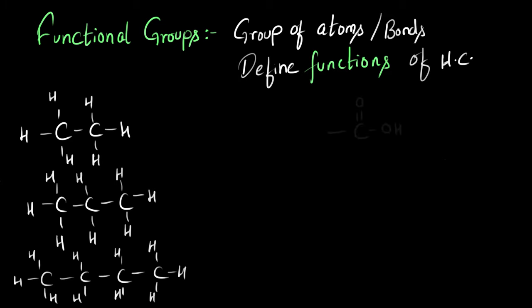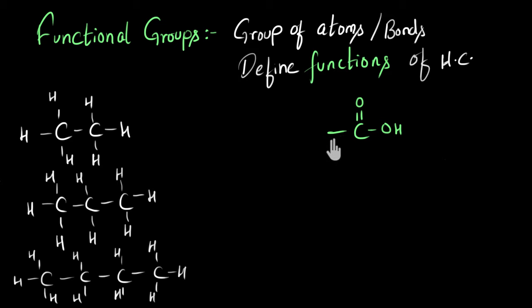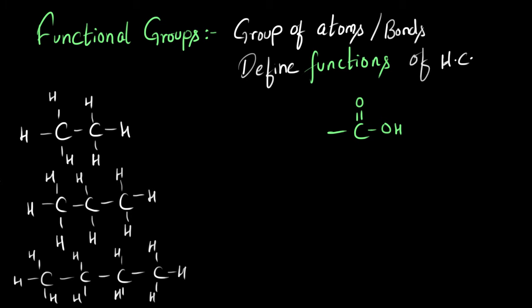For example, I have one group of atoms: C double bond with oxygen, single bond with OH. And this is an empty space where different hydrocarbons can get attached. So this group of atoms is called the carboxylic acid functional group.